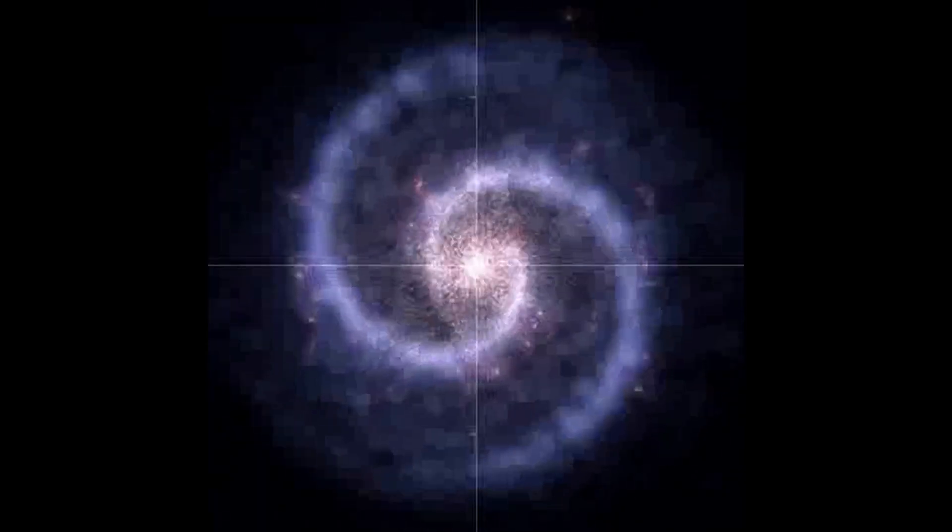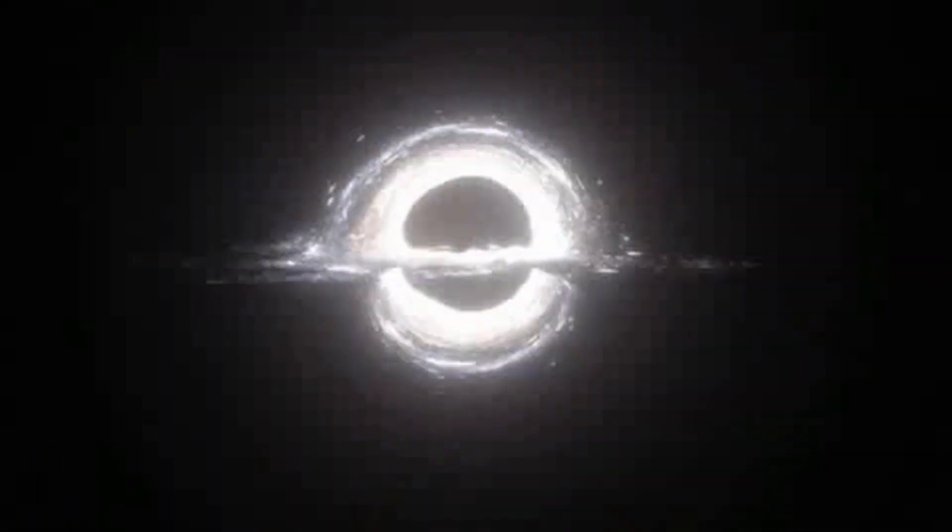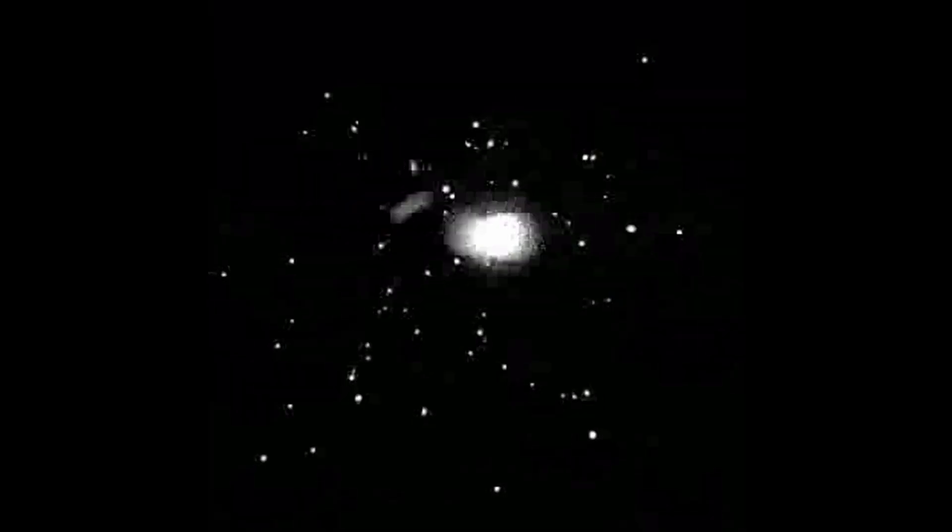In the conventional model of a black hole, matter collapses under the force of gravity, forming a singularity, a point of infinite density surrounded by an event horizon, which marks the boundary beyond which nothing can escape. In contrast, white holes are conceptualized as having a singularity that acts as a source rather than a sink, continuously spewing out matter, radiation, and energy.